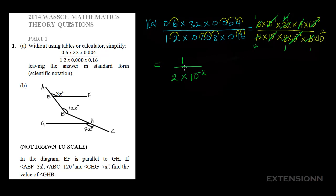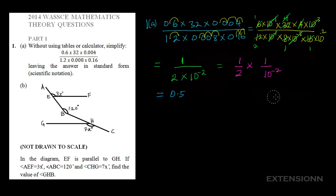We can't leave our final answer like this — we need to further simplify. We split this as 1 over 2 times 1 over 10 to the power minus 2. Now, 1 over 2 is 0.5. Also, 1 over 10 to the power minus 2 can be written as 10 to the power minus times bracket minus 2, using the law of indices.